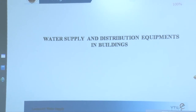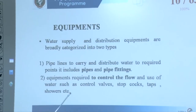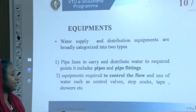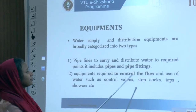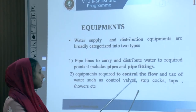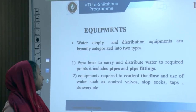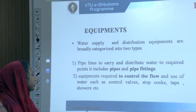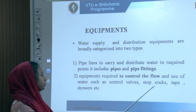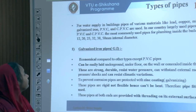Water supply and distribution equipment in a building are categorized into two types: pipes and pipe fittings, and equipment used to control the flow and use of water — such as control valves, stopcocks, taps, and showers.